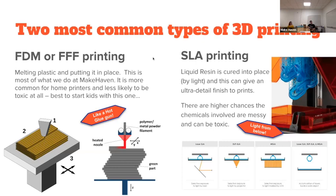There are many different types of FDM printers and specialized filaments for different purposes. FDM printers are quite versatile and their prints are incredibly robust. As each layer heats up it bonds to the layer below, creating a really strong bond. If you pay attention to print direction, you can create very strong parts for your prototypes.